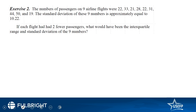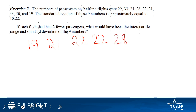To find the interquartile range, arrange all flight passenger numbers in order: 19, 21, 22, 22, 28, 31, 33, 44, and 50. The total number of flights is 9. The interquartile range is the difference between Q3 and Q1.